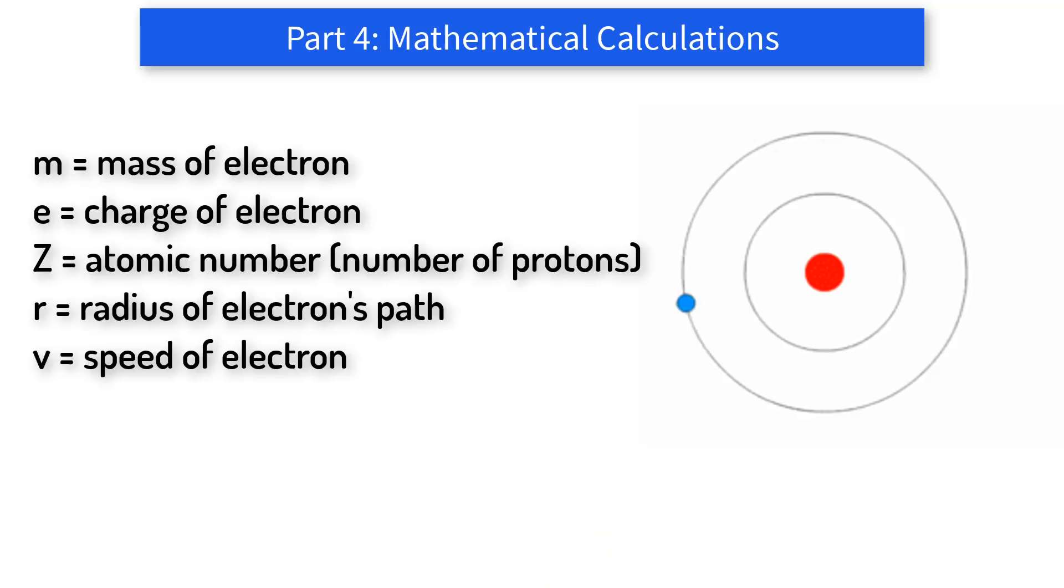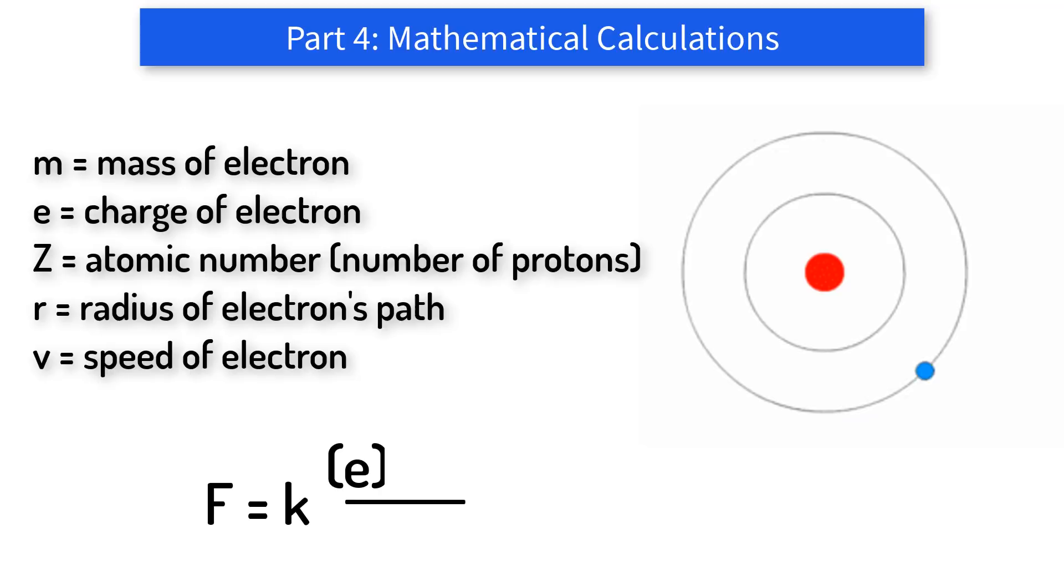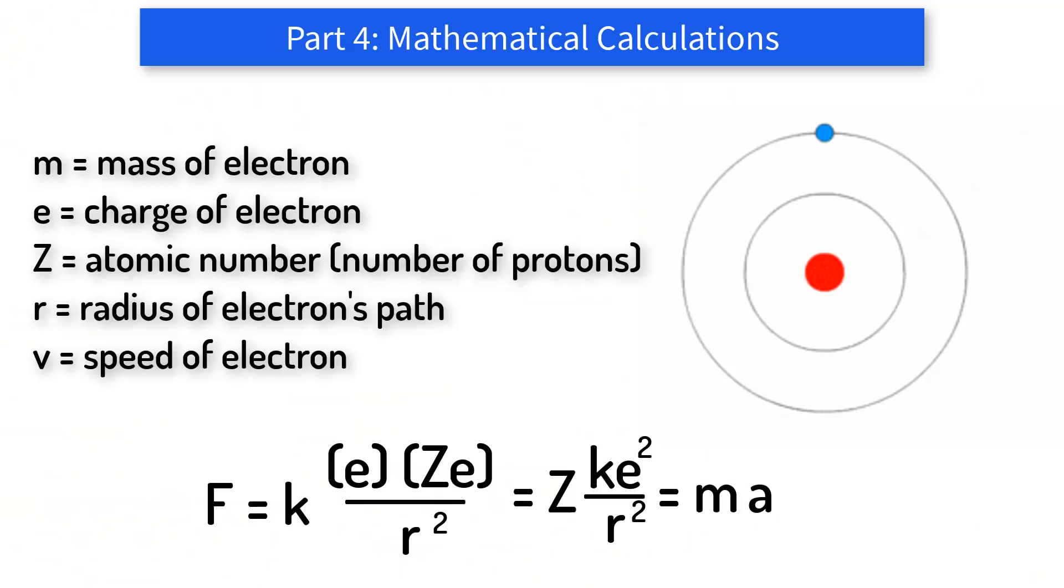Let's start with a single electron of charge e and mass m moving in a circle around the nucleus of charge Ze, where Z is called the atomic number and represents how many protons you have, at a radius r and constant speed v. The only significant force on the electron is electrical, so using Coulomb's law we get that the electrical force is Coulomb's constant k times the charge of the electron e times the charge of the nucleus Ze divided by the distance squared, which can be simplified to be Zke² divided by r². Now according to Newton's law, force equals mass times acceleration, and an object moving in a circle at constant speed has an acceleration of v² over r. Let's call this equation 1.